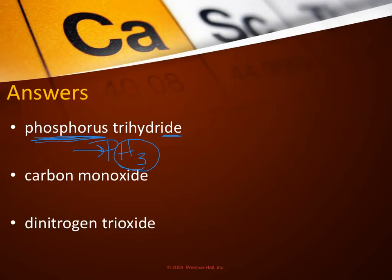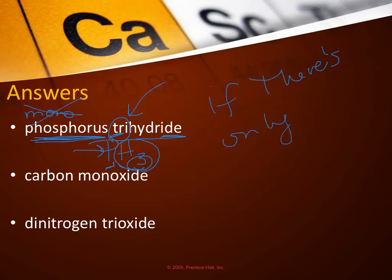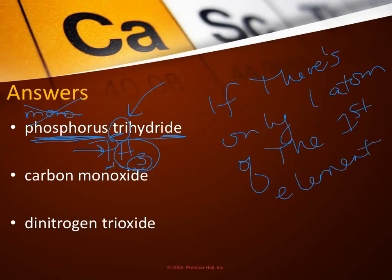However, the difference between ionic and covalent is we use a prefix to tell the reader how many of the element there are. Since there are three, we have to use tri. You may have noticed or wondered why is this not called monophosphorus trihydride because there's only one phosphorus. Listen carefully to this because this is an important rule. If there's only one of the first element, you leave the prefix out. If there's only one atom of the first element, you leave the prefix out.